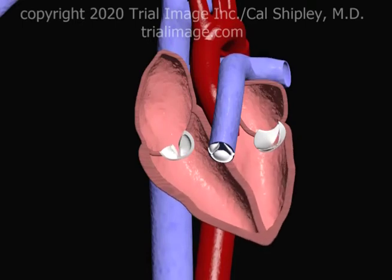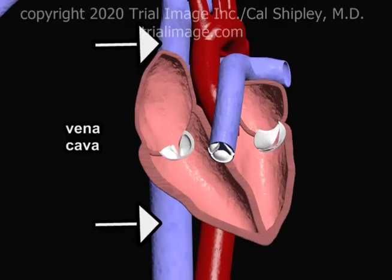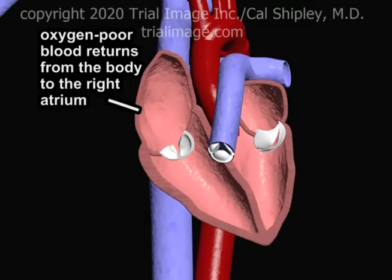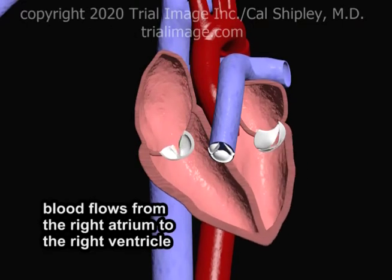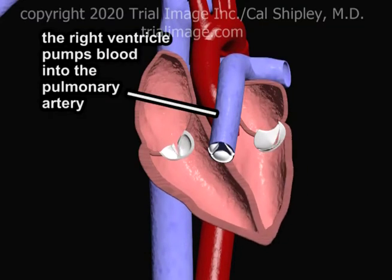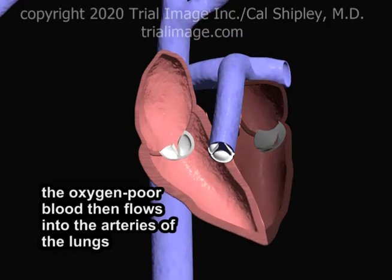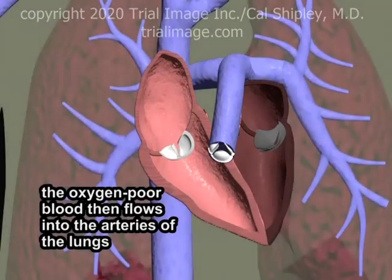Now that we have a better understanding of the anatomical structures of the heart, let's take a look at the flow of blood through it. Oxygen-poor blood flows from the venous system via the vena cava into the right atrium. Assisted by contractions of the right atrium, blood then passes through the tricuspid valve and into the right ventricle. Contractions of the right ventricle then pump the blood through the pulmonary valve and into the main pulmonary artery. From the main pulmonary artery, the blood flows through the arterial system of the lungs, where it is oxygenated. We'll look at the oxygenation process in much more detail later in this review.